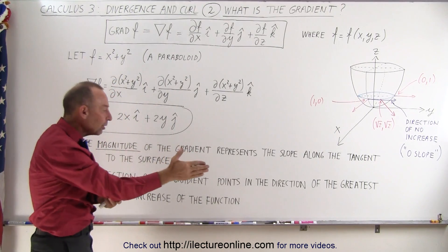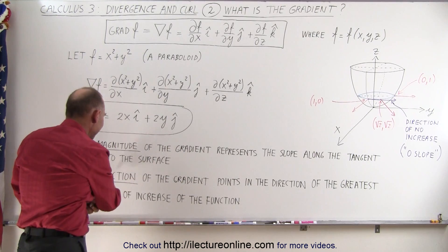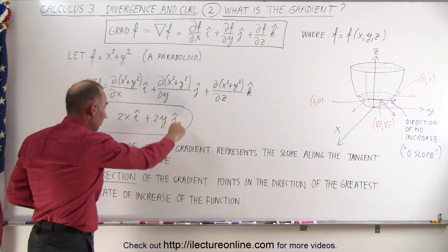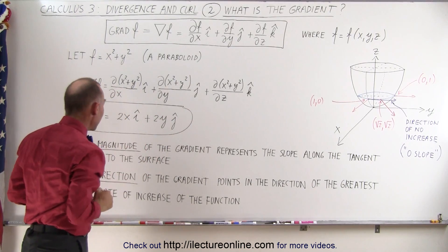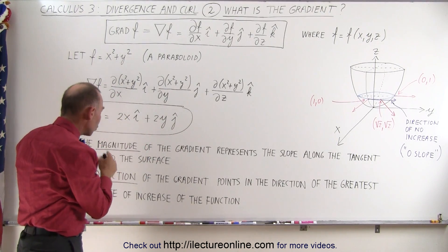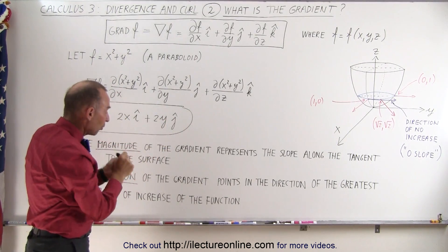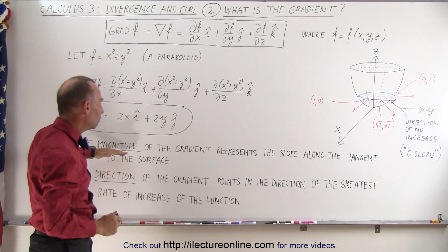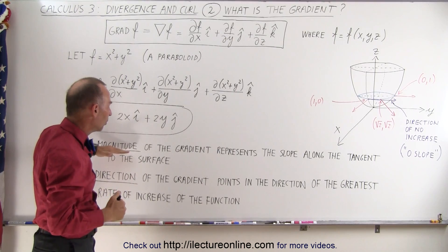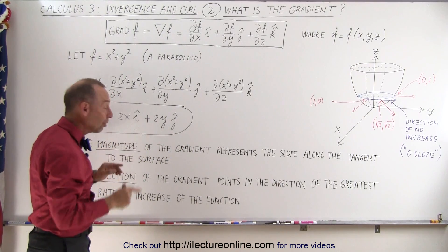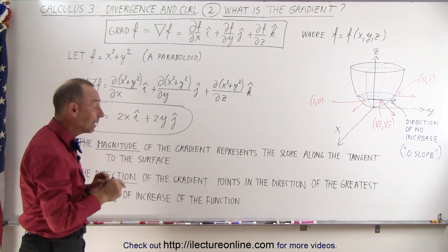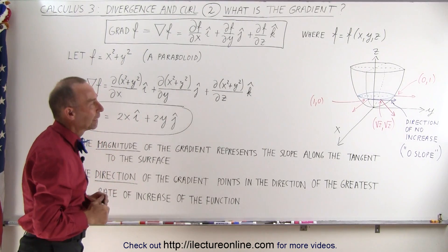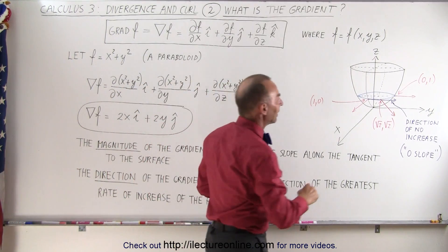Where the vector is pointing tells you the direction of the greatest increase of the slope. So the magnitude is the magnitude of the slope along the tangent line, and the direction the vector points tells you where the slope is steepest. Now let's look at the paraboloid and apply this.